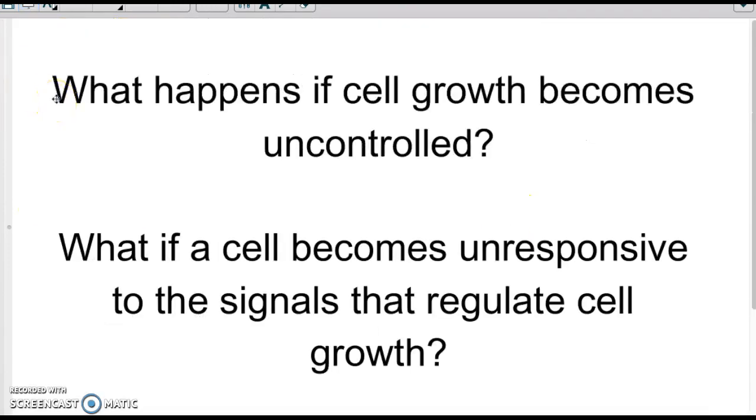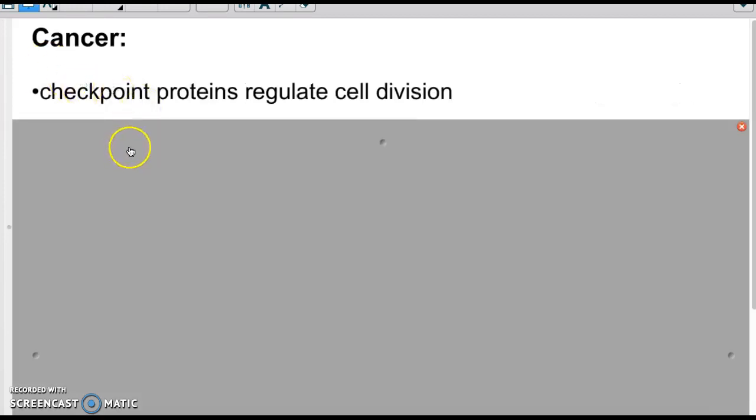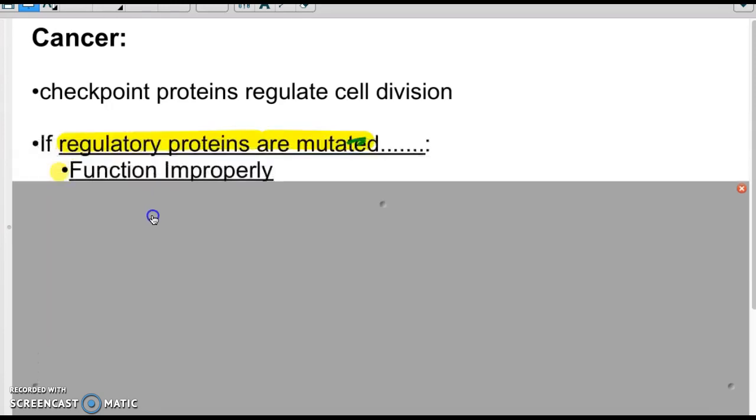So then what happens if a cell just becomes uncontrollable? These checkpoints essentially, think of that they are not responding to the signals. They're not responding to the stoplight. Instead, they are running the red light, even though the cell is saying, stop, you're not ready to move on to the next stage. What happens? Well, this is what we call cancer. Cancer is when the proteins are not regulating the cell cycle, and they are ignoring those checkpoints, and they're just growing uncontrollably.